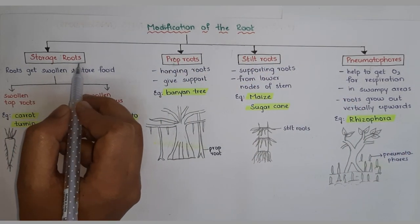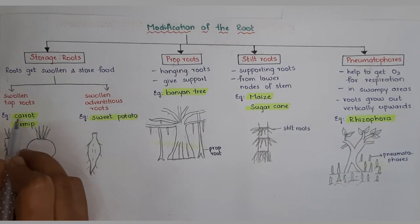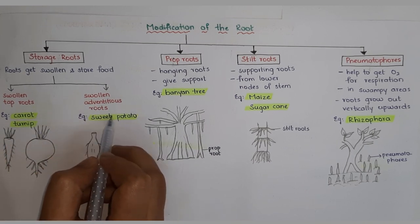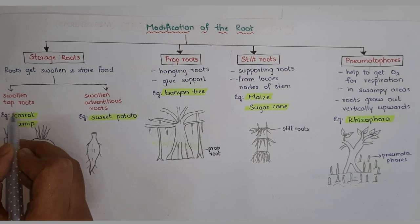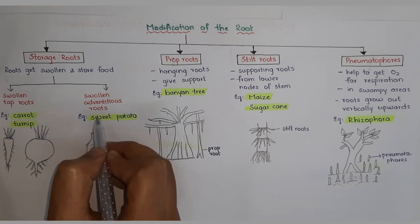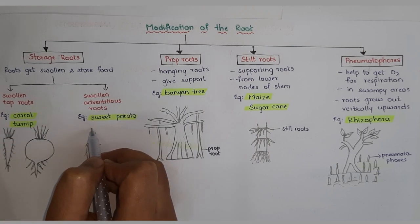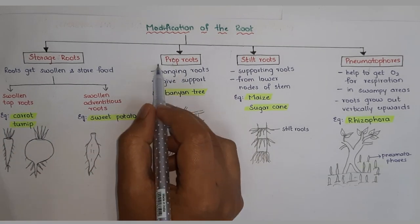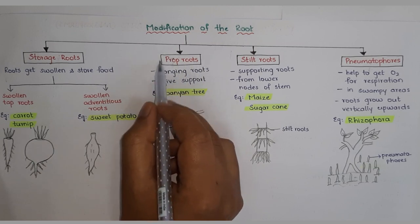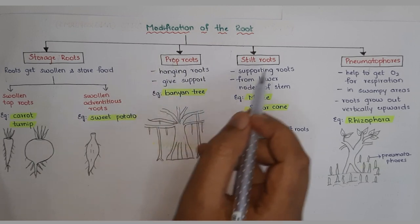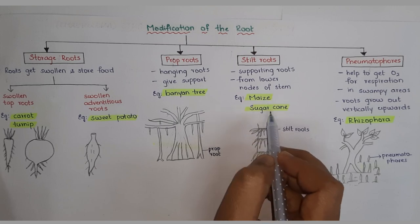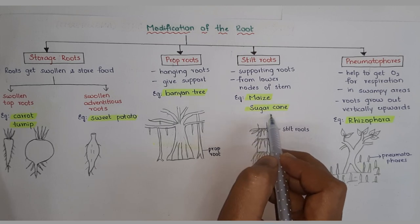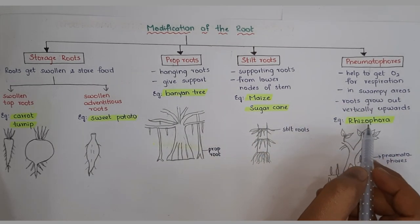To revise the examples of modifications of the root: storage roots — swollen tap roots are carrot and turnip; swollen adventitious roots are sweet potato. Prop roots — banyan tree. Stilt roots — maize and sugarcane. Pneumatophores — Rhizophora.